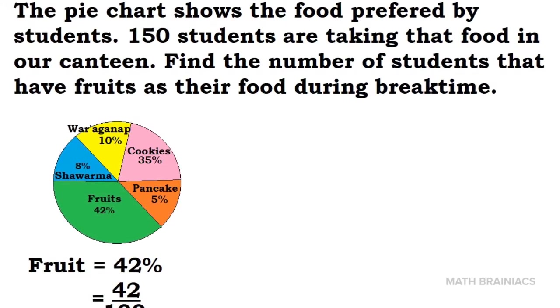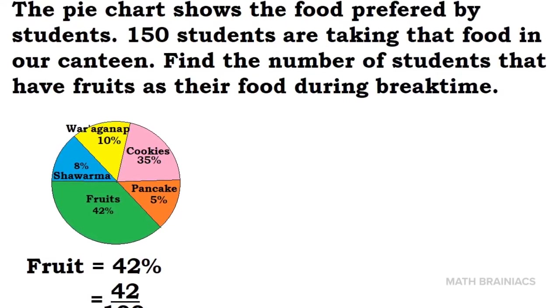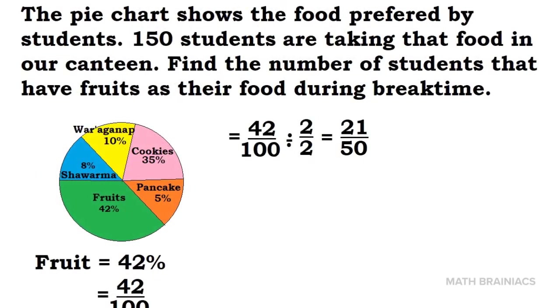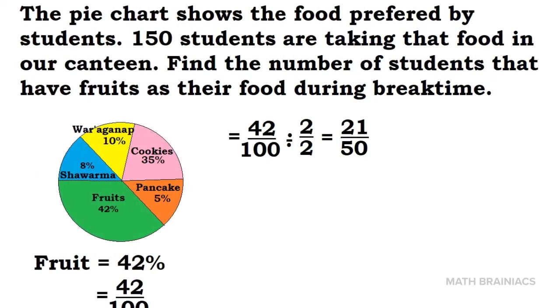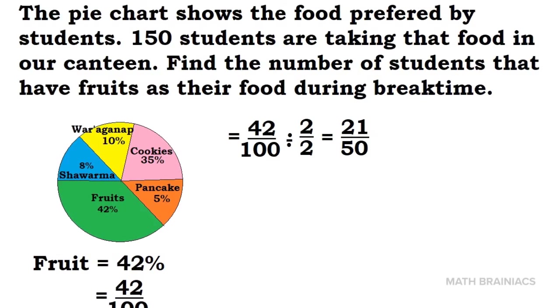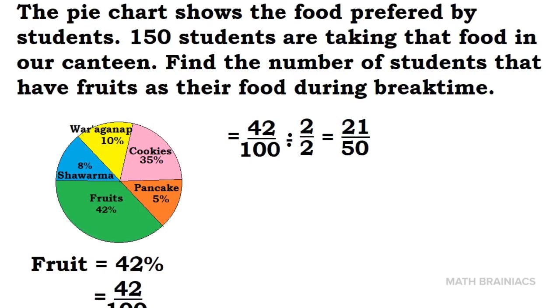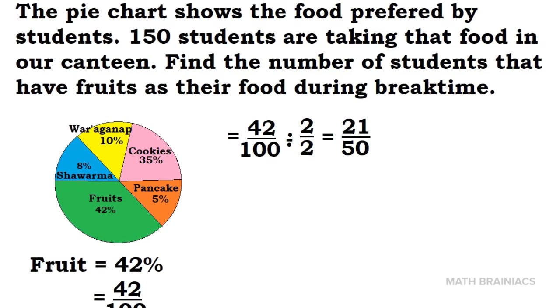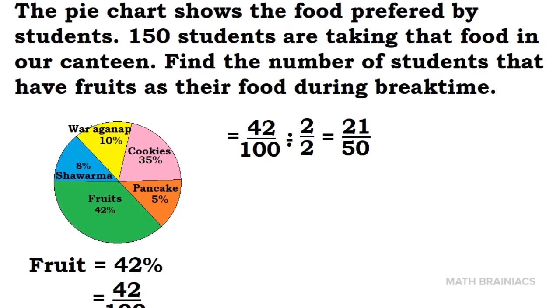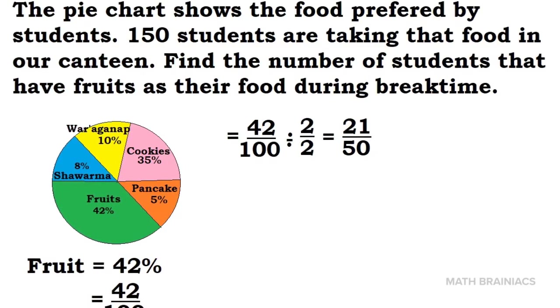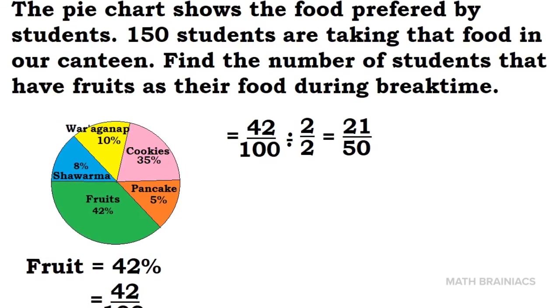We are going to convert 42% into fraction. 42% is 42 over 100 in fraction. We are going to look for the common factor of 42 and 100, and in this case, it is 2. Therefore, we are going to divide both the numerator and denominator by 2. 42 divided by 2 is 21, and 100 divided by 2 is 50.